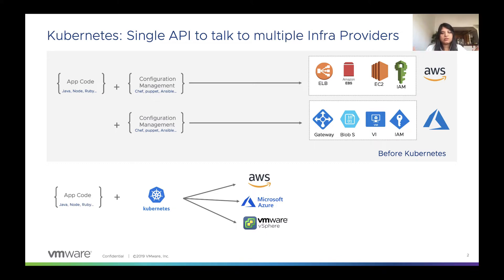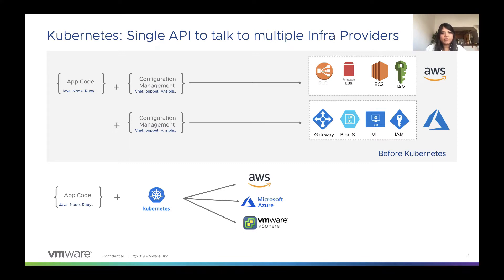I think Kubernetes changed a lot of this paradigm by abstracting away infrastructure. We all know that Kubernetes does this very well. Kubernetes is making things a lot more simpler. So rather than having to talk to every infrastructure provider — AWS, vSphere, Google Cloud, Azure — you now just talk to the Kubernetes API, and then the Kubernetes API is going to handle the workload creation and deployment on that particular infrastructure.